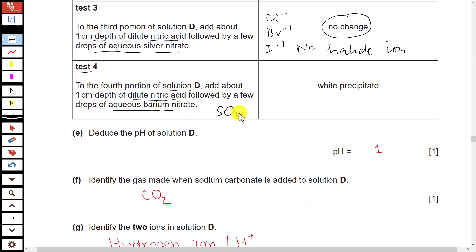And the positive result for this test is white precipitate that are produced. Here it indicates the ion other than hydrogen ion present in the solution is sulfate ion, and we may conclude that the solution D is sulfuric acid because hydrogen ion and sulfate ions are there.